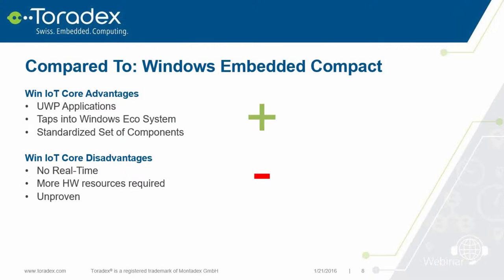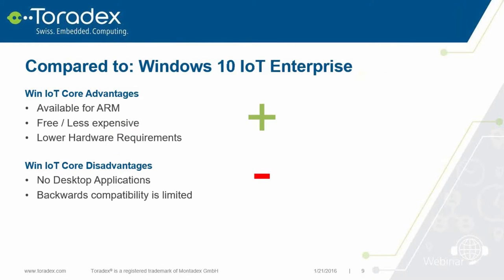Windows IoT Core needs more hardware — we saw Windows CE can be a few megabytes, but for Windows IoT Core you should have 2 gigabytes of storage. And it's unproven — Windows IoT Core is really new and not yet proven in the market, so it's not fully clear where it will go and how successful it will be.